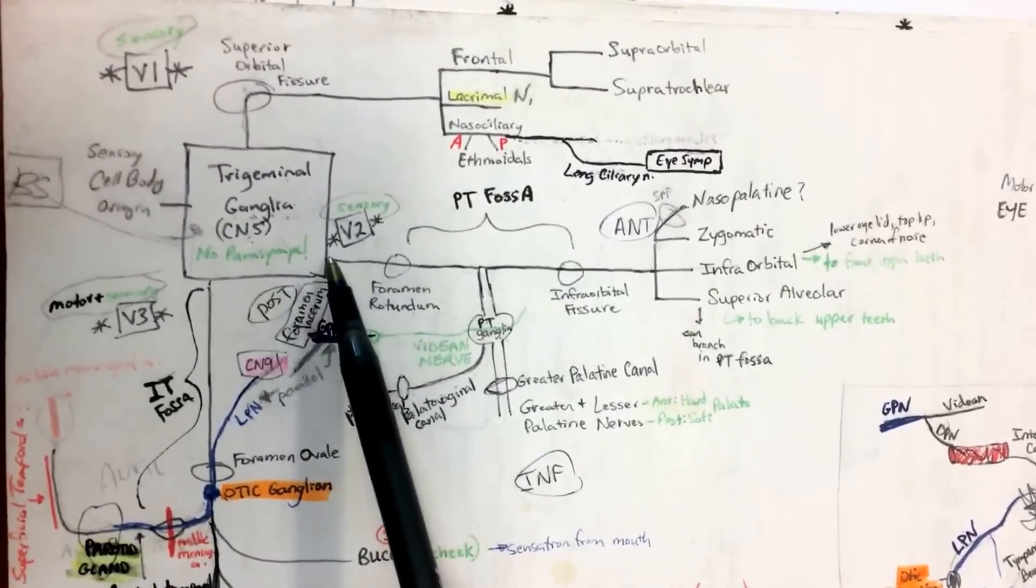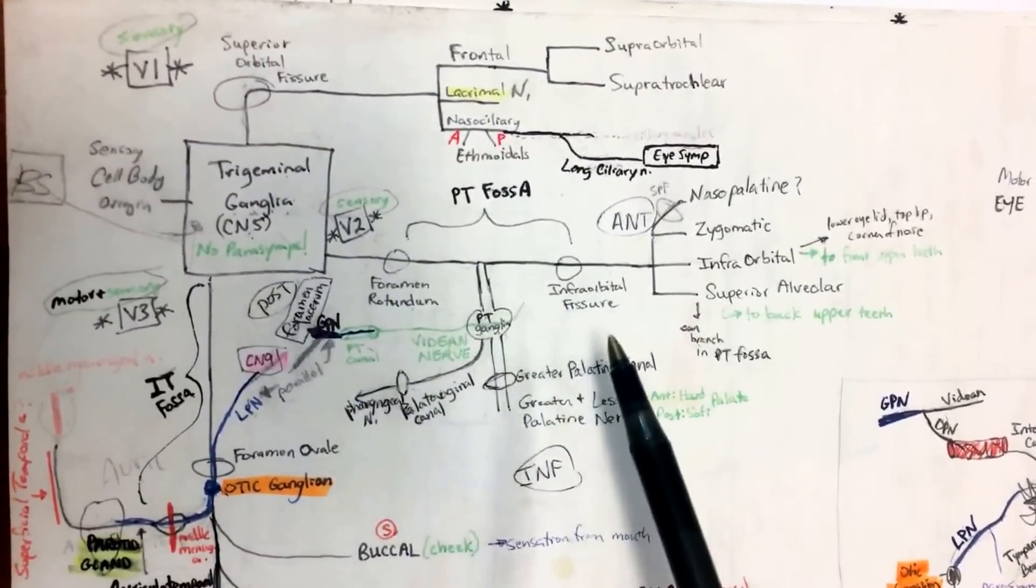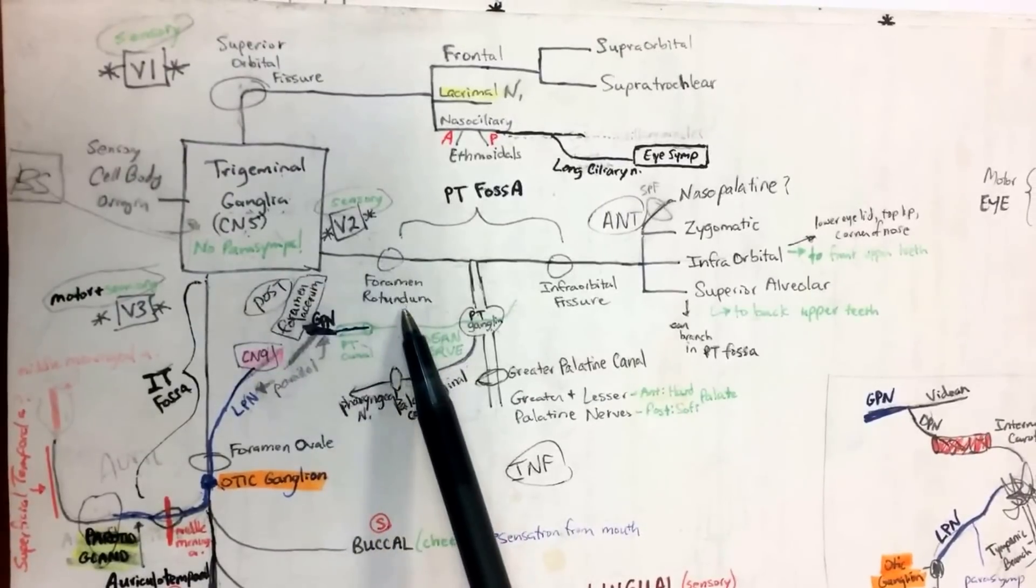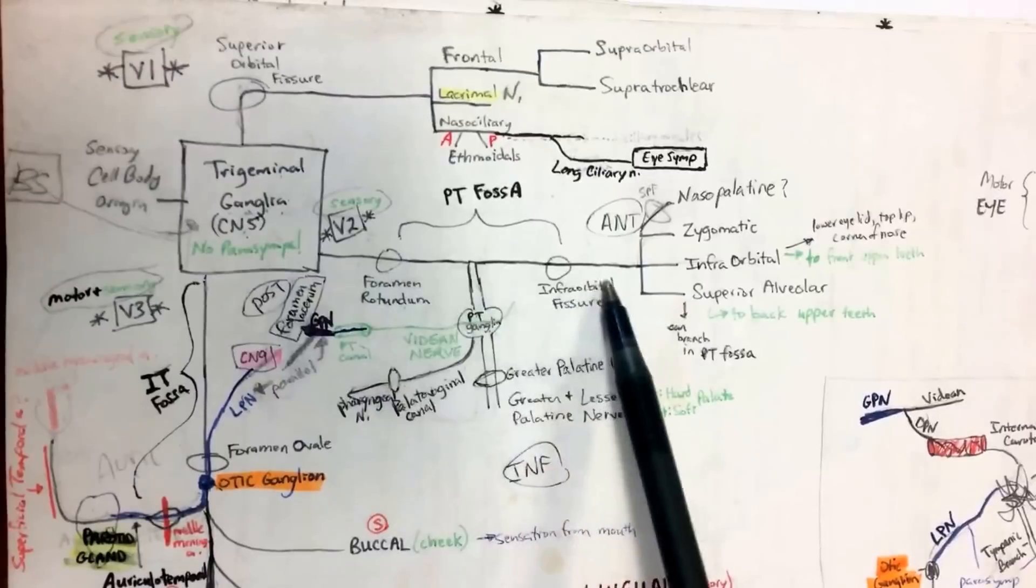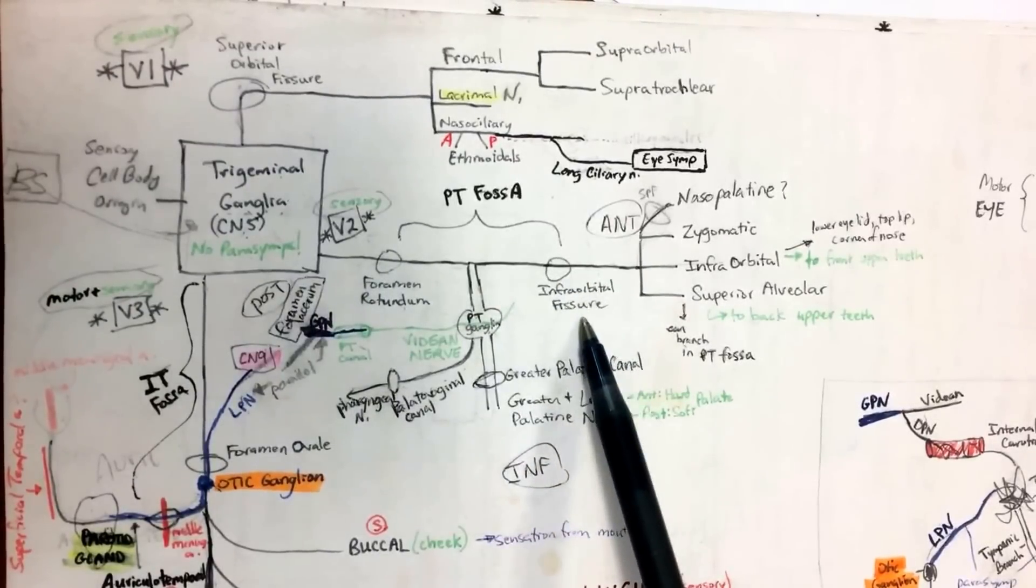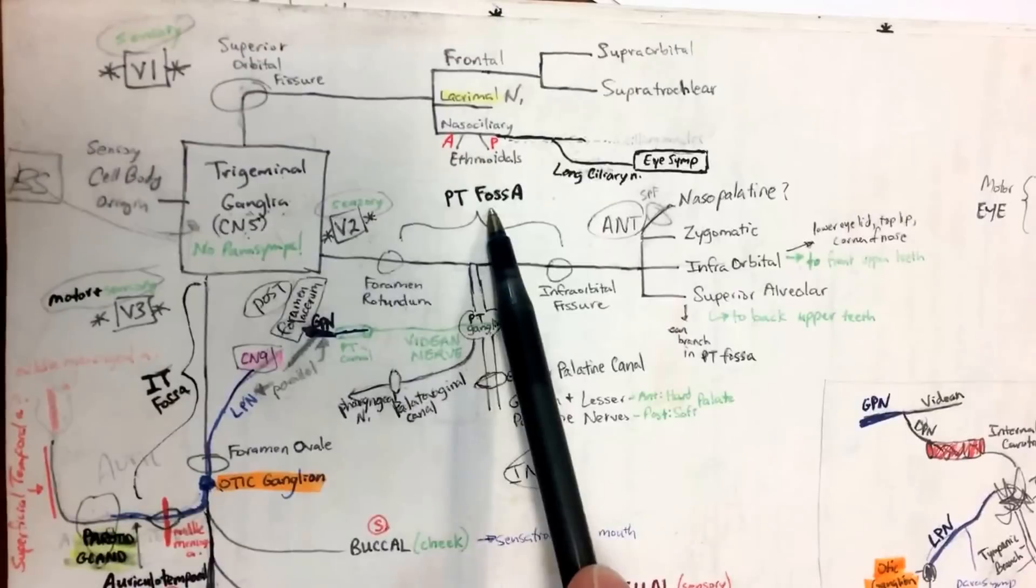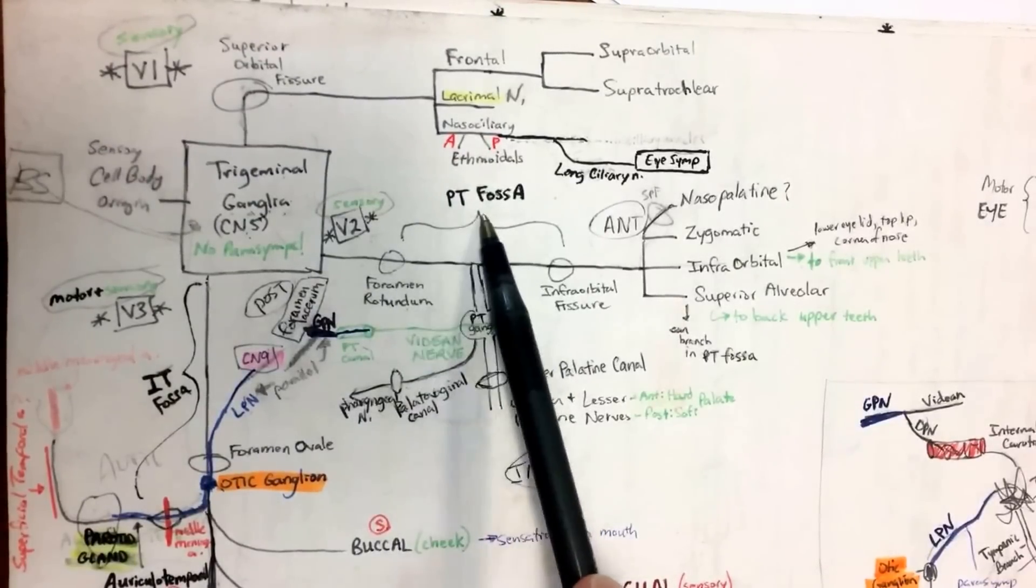In general, I originally drew this out and then added more details as we went, but I'll just give you all the details now. So V2, we said it's sensory, it busts through foramen rotundum, and then it goes to the infraorbital fissure. And between those two, infraorbital fissure and foramen rotundum, that's your PT fossa.